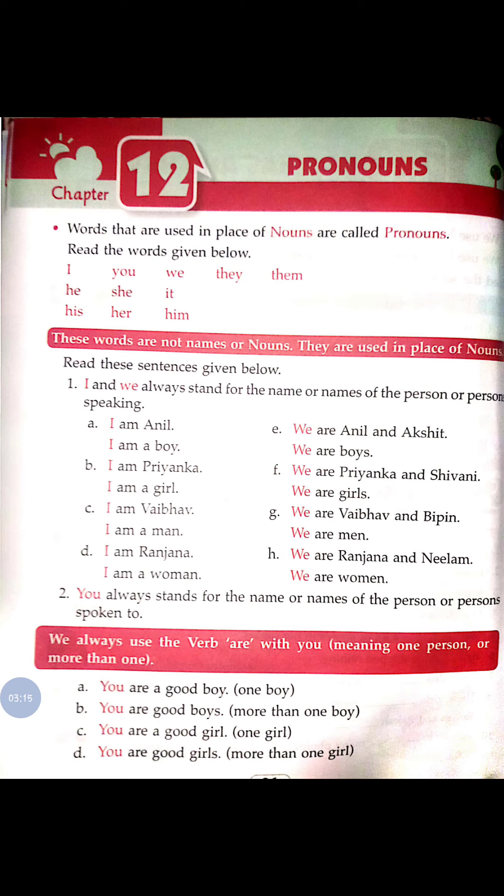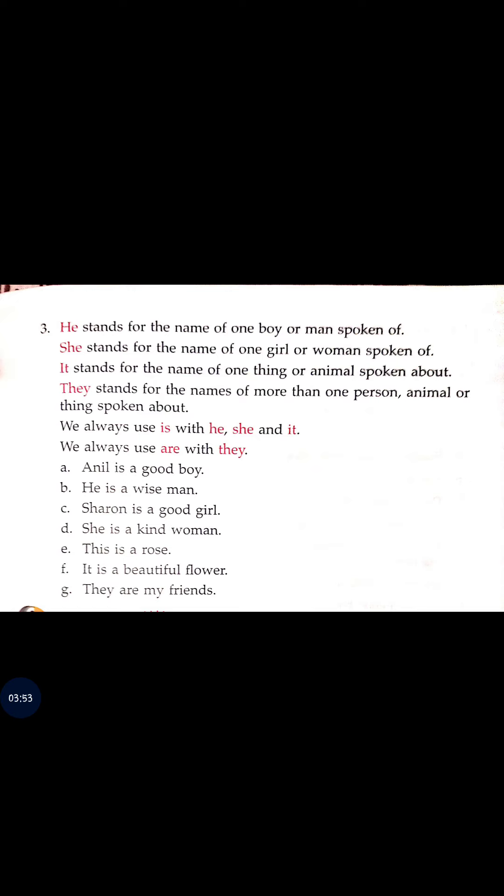'He' stands for the name of one boy or one man spoken of. For example, if I say tell me about your father — first you say my father's name is this, then: he is so many years old, he is working there, he is a good person, he is very hardworking. So 'he' is used for a man or boy. And 'she' is used for one girl or woman.